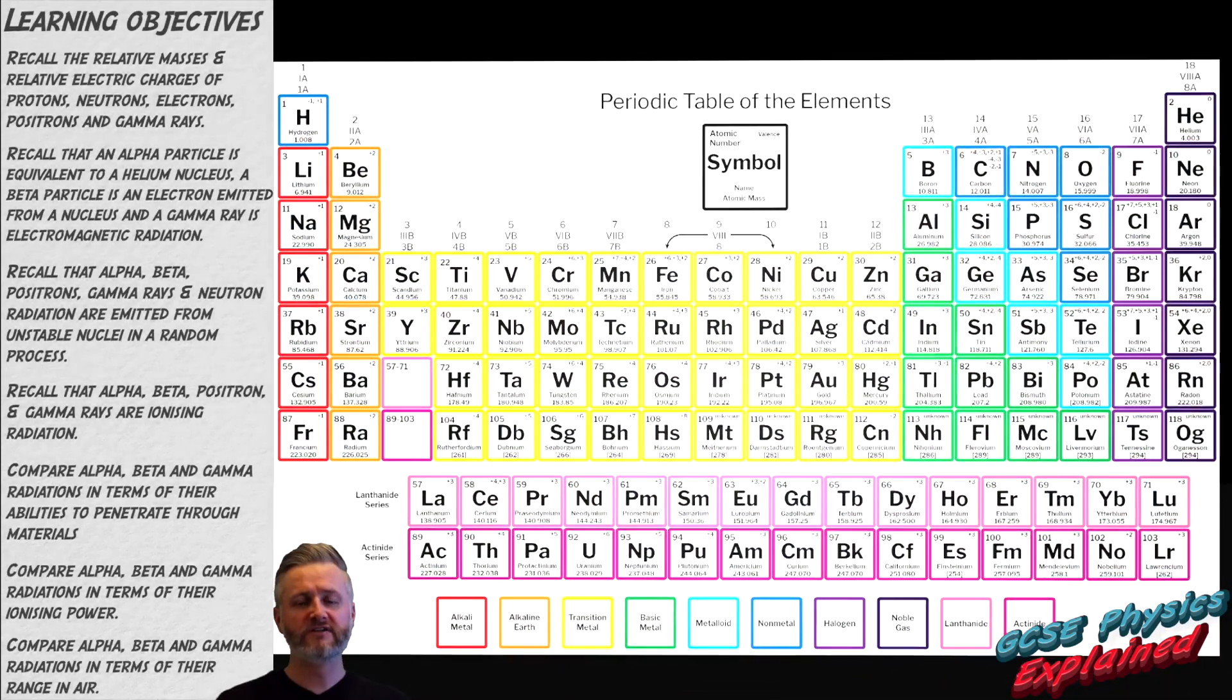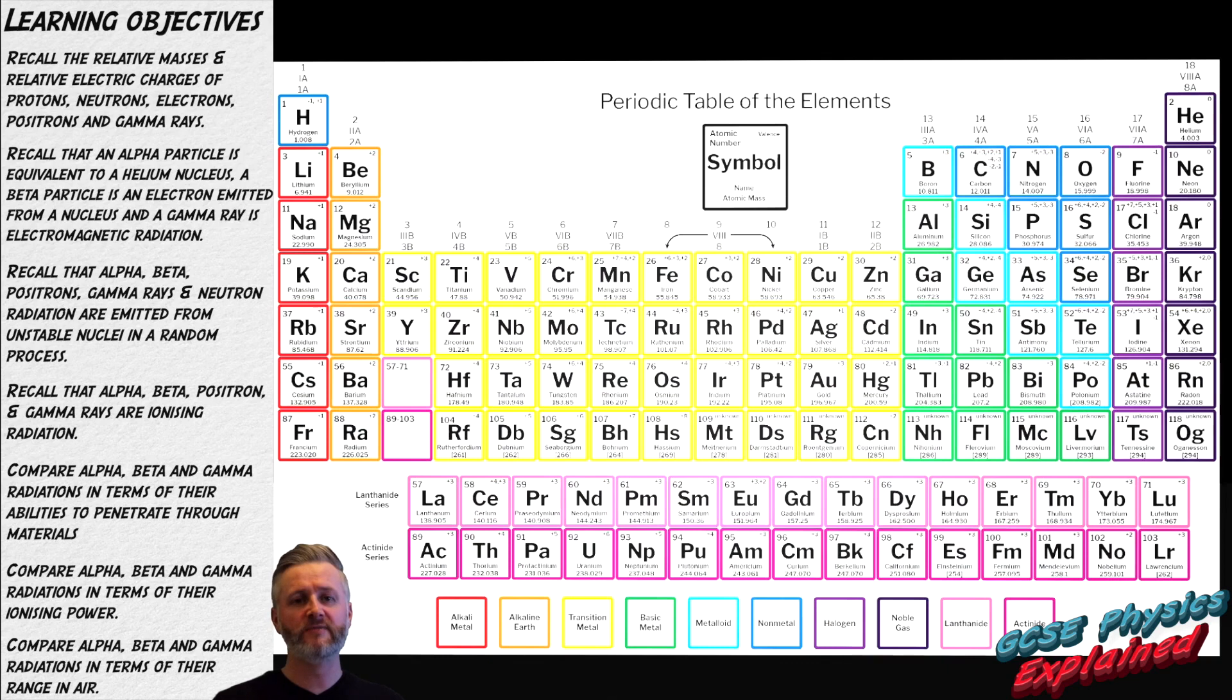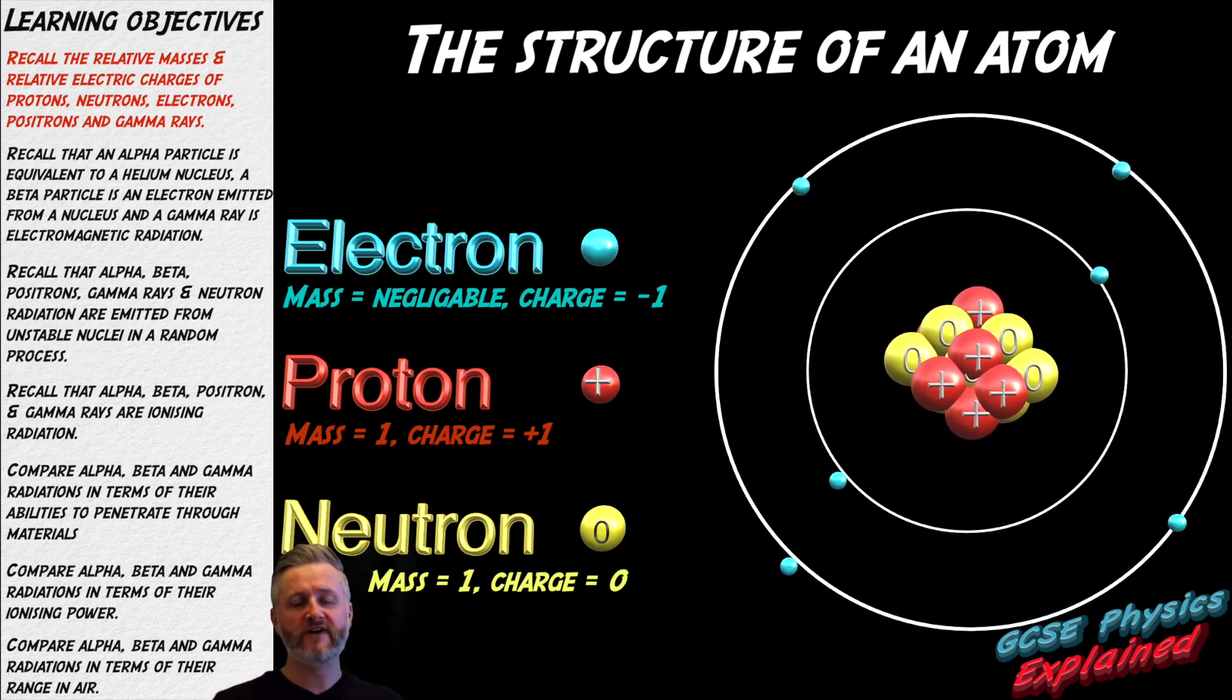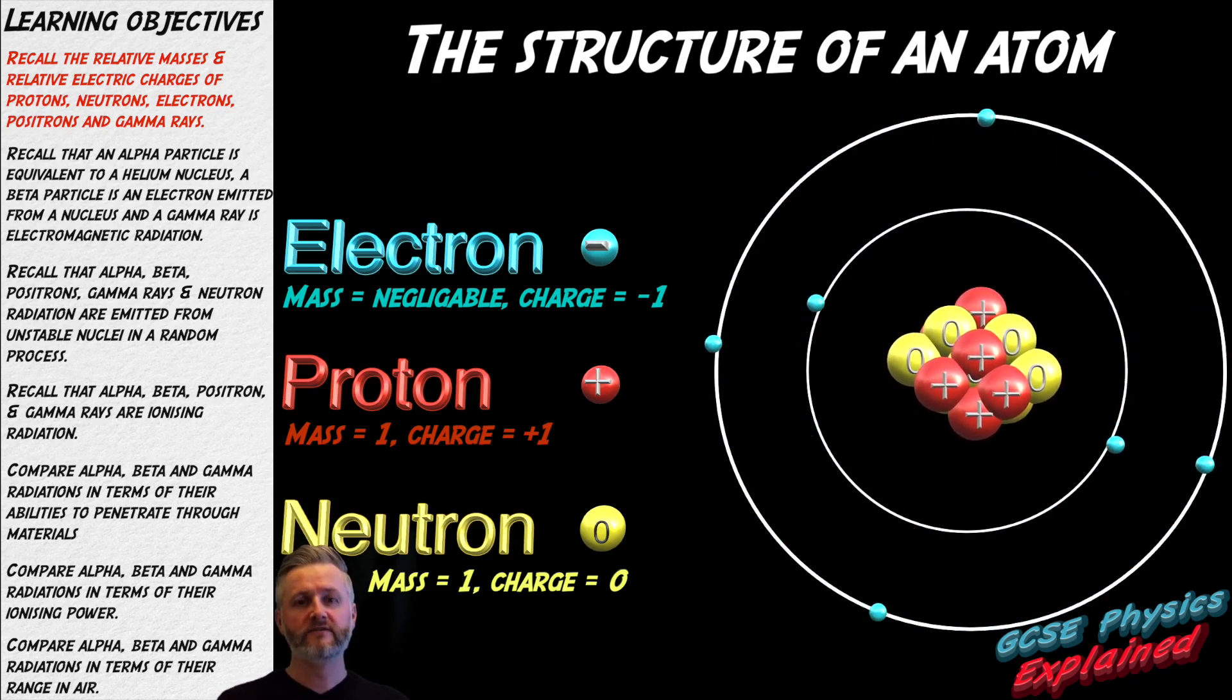This is the periodic table. The full table shows all 118 elements that humans have discovered. Elements are made from atoms. Atoms are made from three subatomic particles called protons, neutrons and electrons. The protons and neutrons are found in the nucleus of the atom at the centre. The electrons orbit around the nucleus.